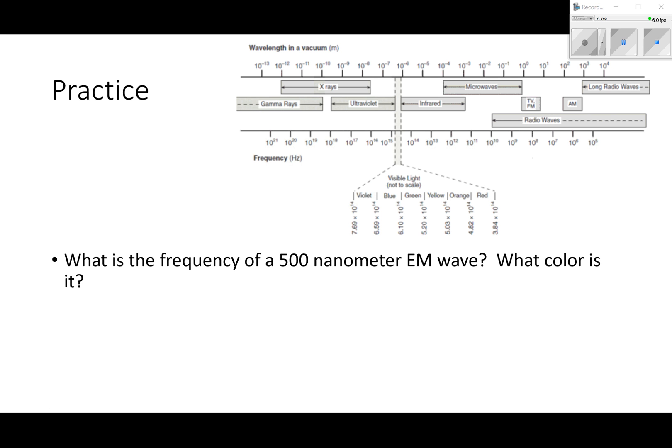Why don't you guys try this one? What's the frequency of a 500 nanometer EM wave and what color is it? Please pause the video and try it. When you resume we'll go over the answer. This one, same thing as the last one. We solve for f - it's 6 times 10 to the 14 hertz, and the color is green.